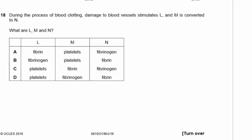Question 18: During blood clotting, damage to blood vessels stimulates L, and M is converted to N. What are L, M, and N? When you get a cut, platelets form a temporary block, but a mesh is needed. Does fibrin turn into fibrinogen, or does fibrinogen turn into fibrin? Fibrinogen turns into fibrin, and fibrin is the mesh that closes the wound. The answer is D.